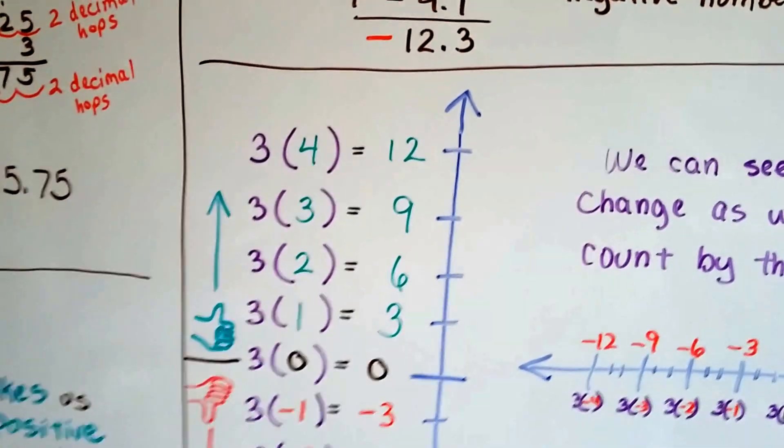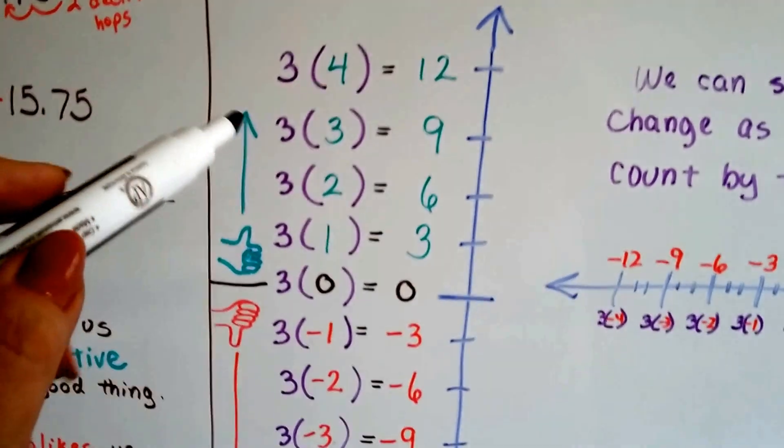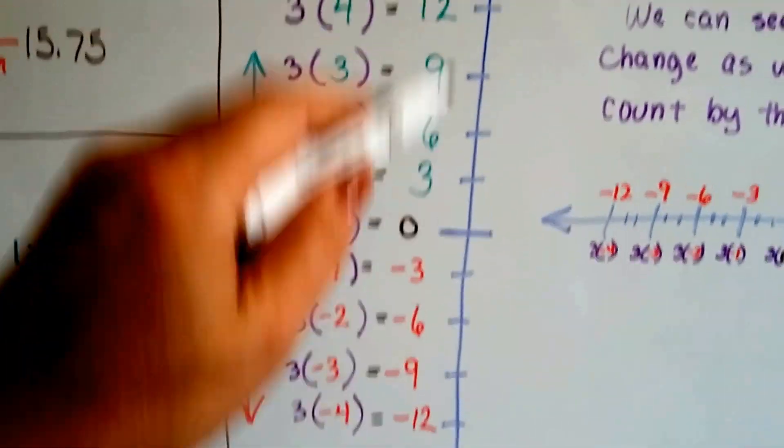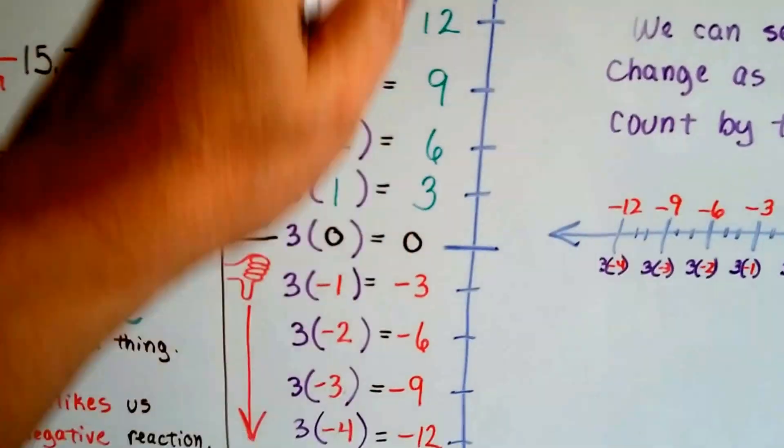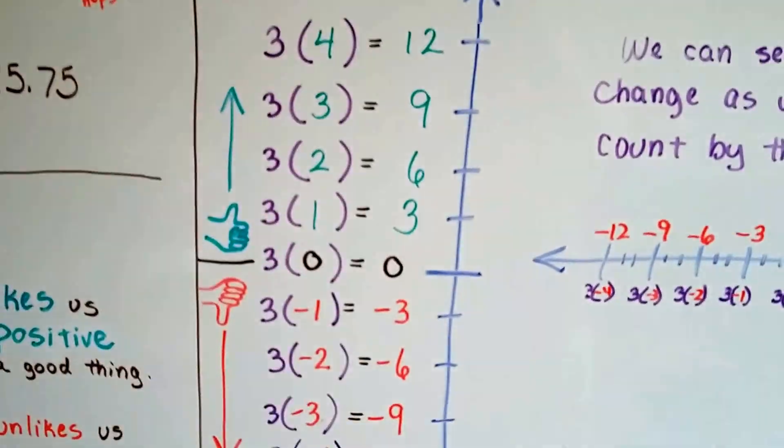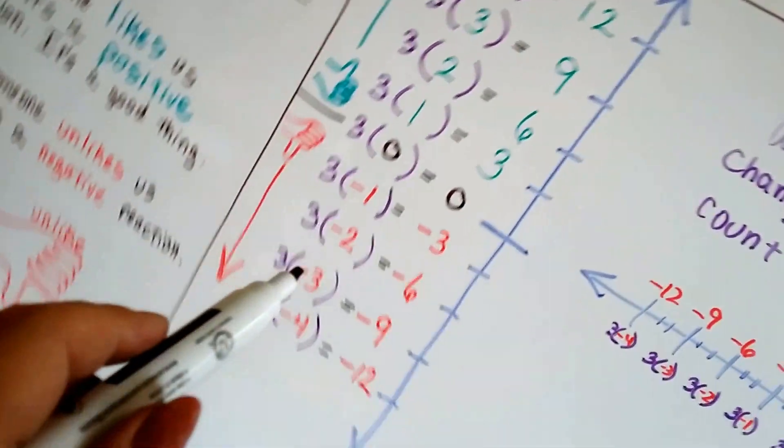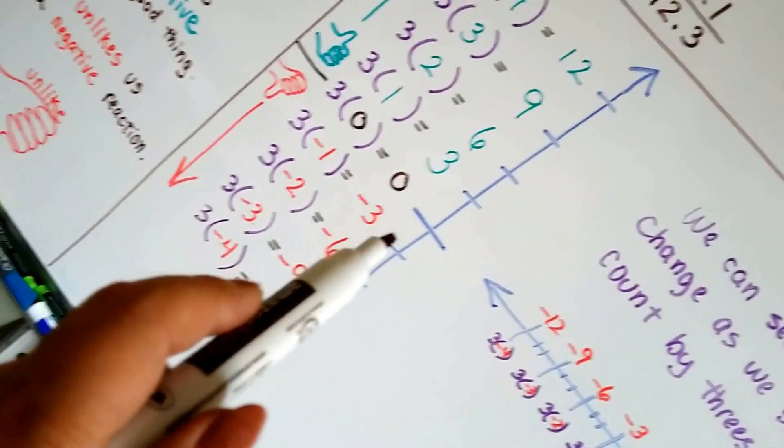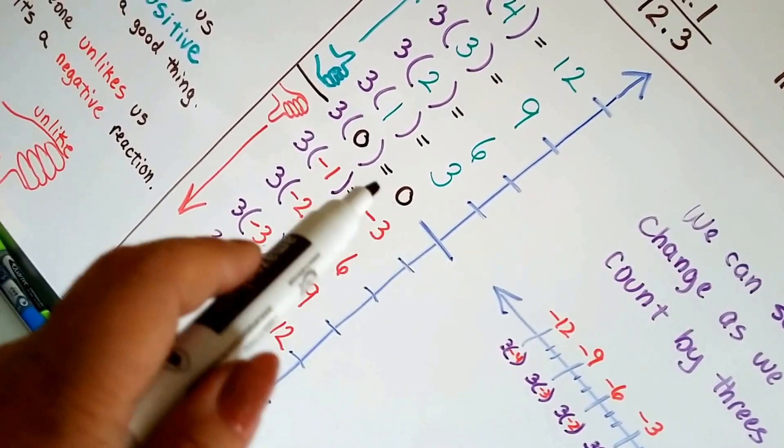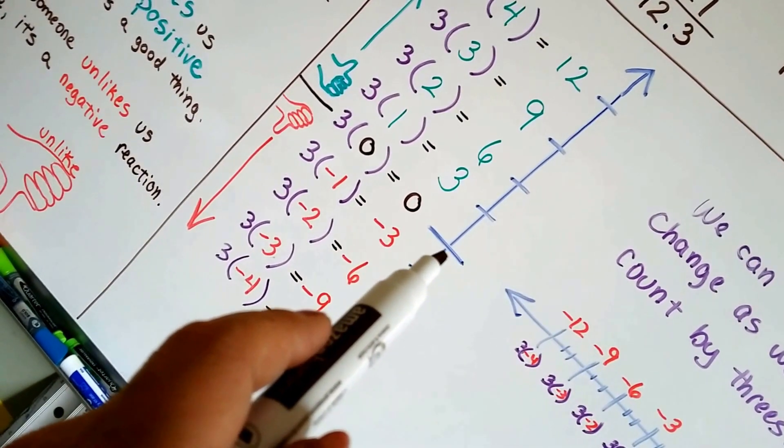I want to show you something we've done before last year. Let's say we've got a number line except it's standing up. Instead of laying down, it's standing up, okay? Here's the zero. And you can kind of imagine it if I turn my camera sideways. Here's the zero.